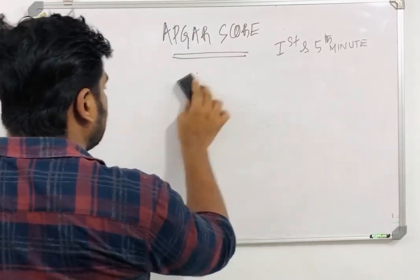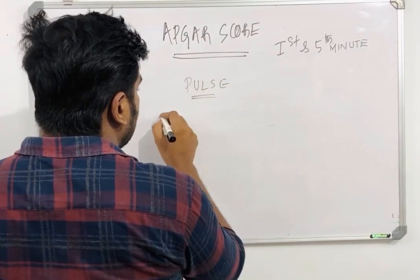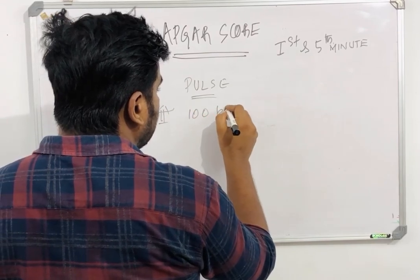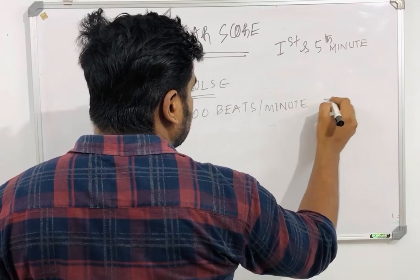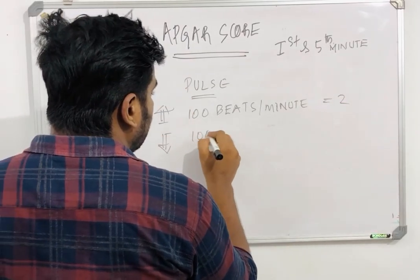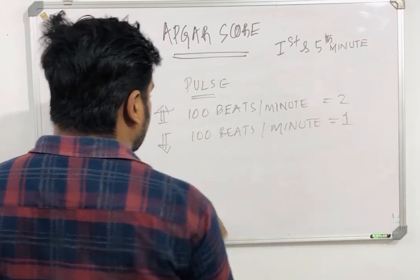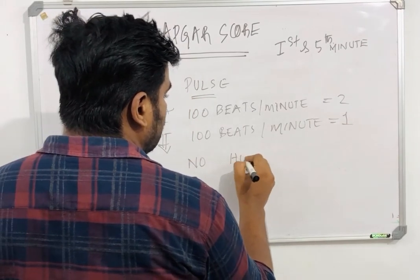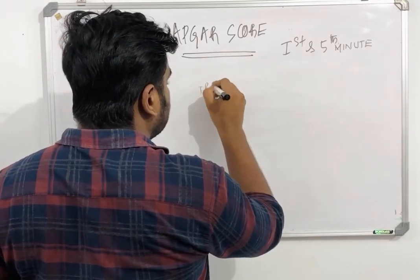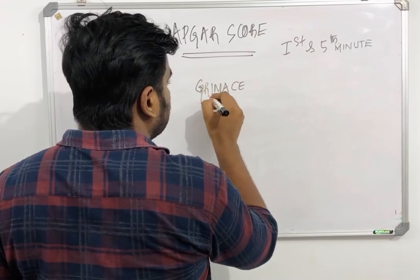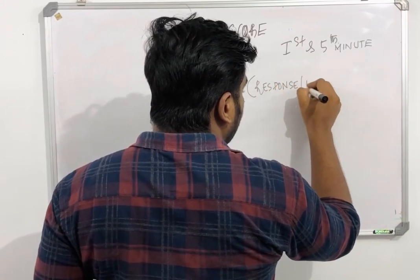Next is Pulse. The normal pulse for newborn babies is 100 to 160 beats per minute. If the heart rate is above 100 beats per minute, the score is two. If the heart rate is below 100 beats per minute, the score is one. If there is no heart rate, the score is zero.